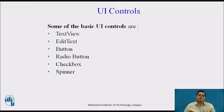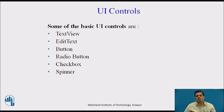Next is user interface controls. The user interface consists of a hierarchy of objects called views. Every element of the screen is a view. The view class represents the basic building block for UI components, and UI controls contain a view which serves as the base class for interactive UI components such as buttons, checkboxes, text, spinner and text entry fields.